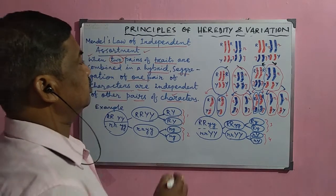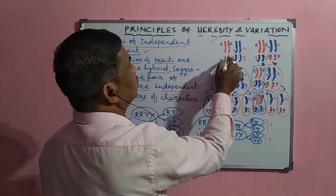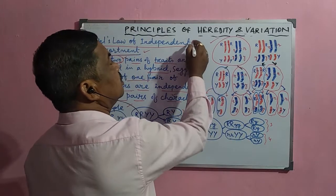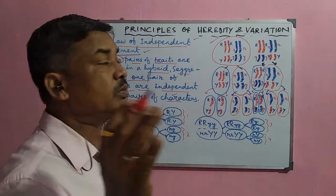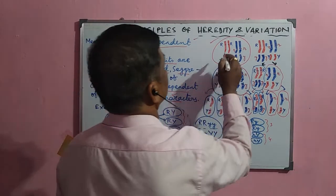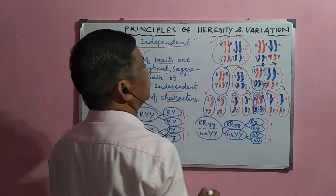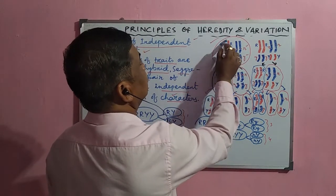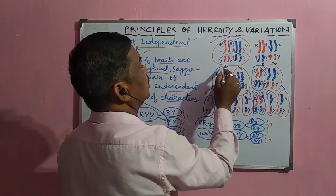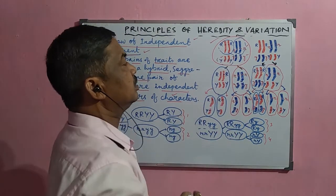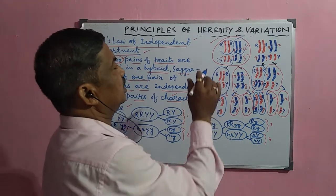This law of independent assortment is very well explained by this method. In a particular cell, suppose there are four chromosomes, as we have already discussed in the di-hybrid cross experiment. Irrespective of many other characters, we only observe the pattern of four chromosomes, or four pairs of chromosomes, four pairs of alleles in each case. These are round (capital R), then wrinkled (small r), then yellow (capital Y), and green (small y). The round character is expressed by this chromosome, and this is the wrinkled small r, and this is capital Y — that is your yellow character — and small y is your green character. These characters are expressed by these four chromosomes.